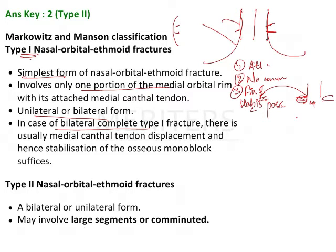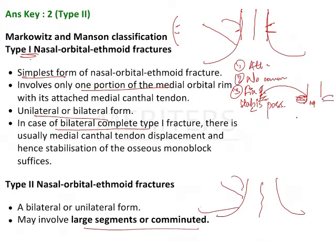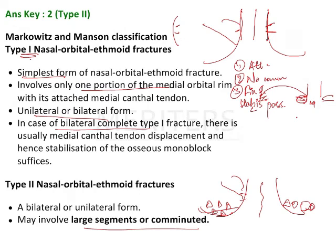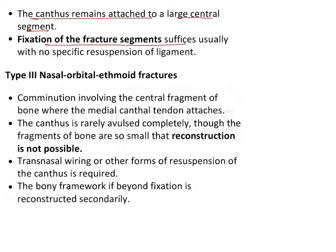Type 2 fractures can again be unilateral or bilateral, and may involve large segments or could be comminuted. You can have more than one fracture line, or the entire floor of the orbit could present as multiple fragments. However, the canthus remains attached to a large central segment and fixation of the fragment is sufficient. The medial canthal ligament is not displaced and the comminuted bones can be fixed.